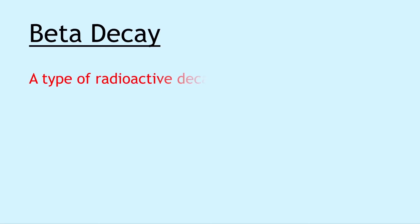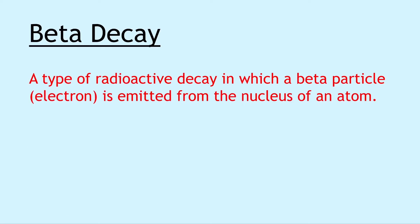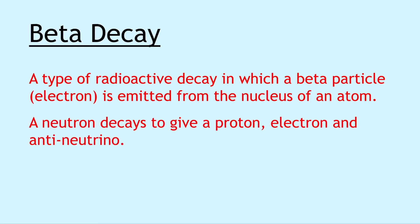Next we have beta decay, which is a type of radioactive decay in which a beta particle, i.e., an electron, is emitted from the nucleus of an atom. During beta decay, a neutron decays to give a proton, electron, and antineutrino.